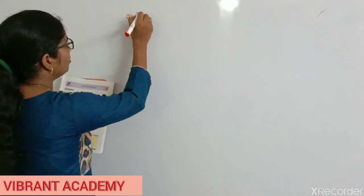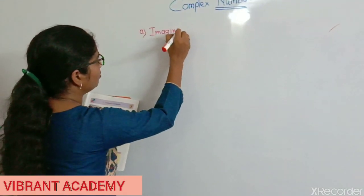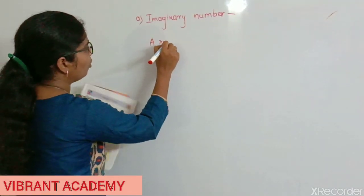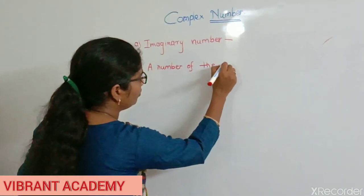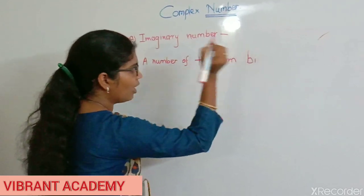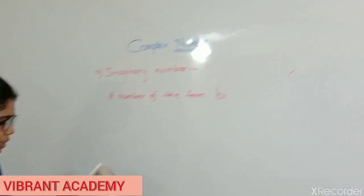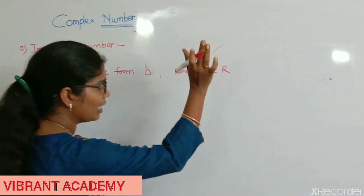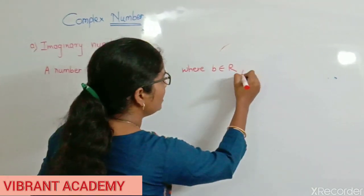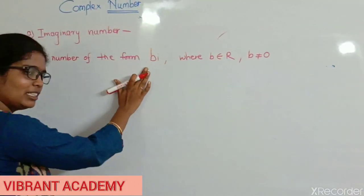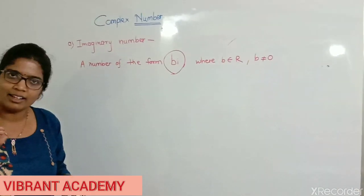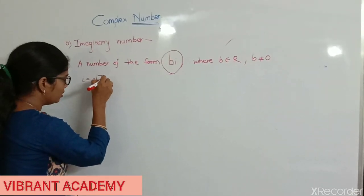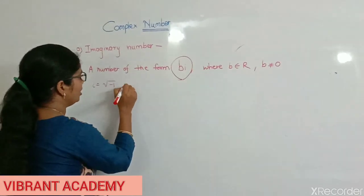Next: the imaginary number. The definition of imaginary number is: a number of the form bi, where b belongs to the real numbers R, and b is not equal to 0, and i equals under root minus 1, is called an imaginary number. Note carefully: b is not equal to 0.